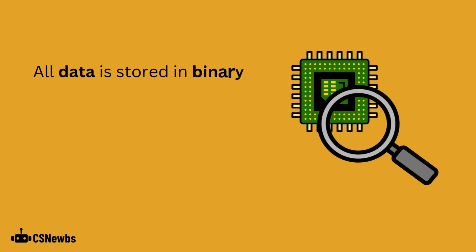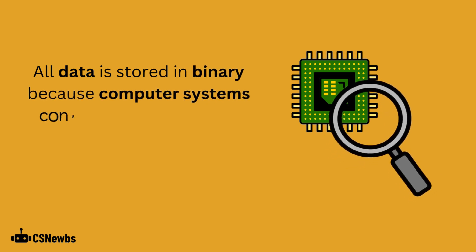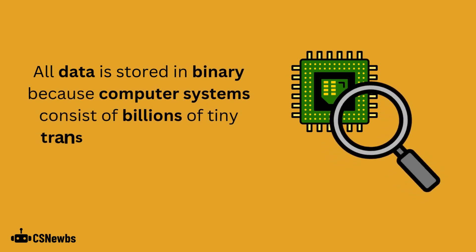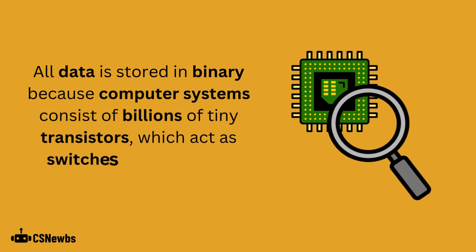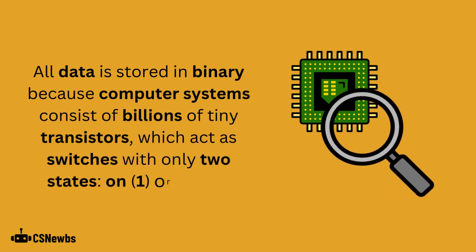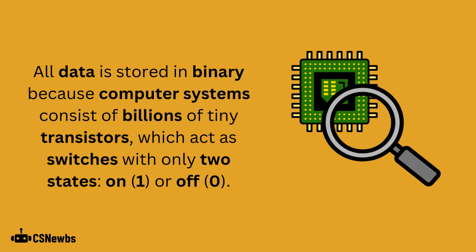All data is stored in binary because computer systems consist of billions of tiny transistors which act as switches with only two states, on represented by one and off represented by zero.